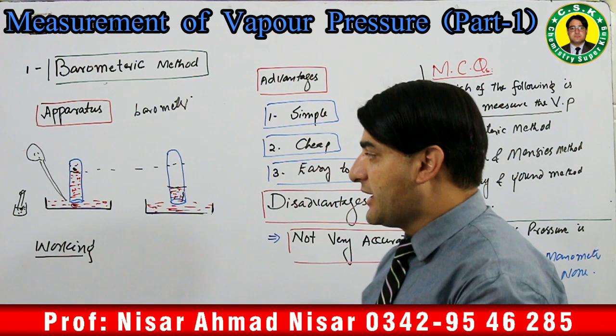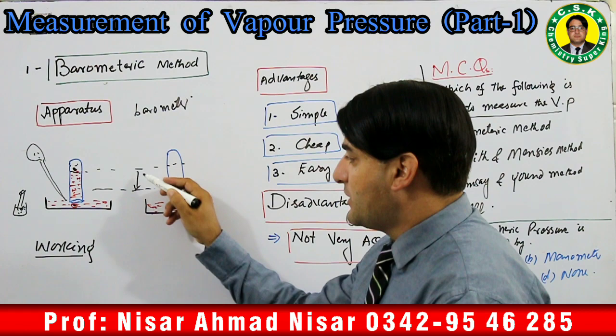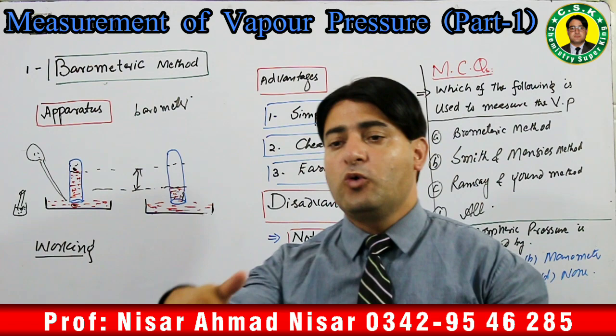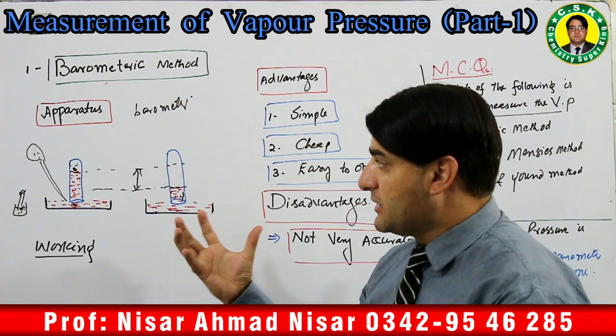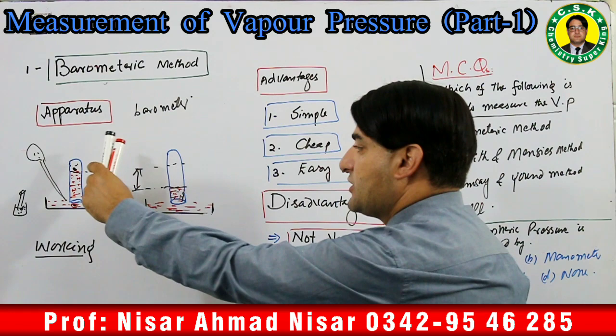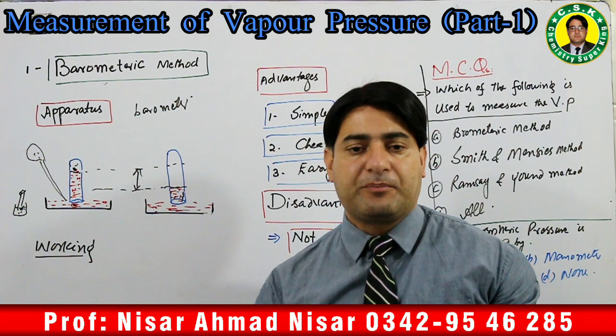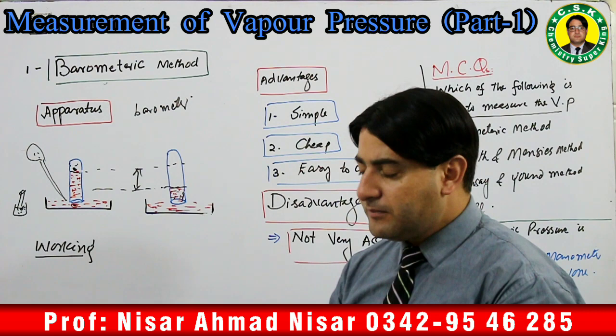Jab downward pressure lagaayenge to mercury ka level tube mein neeche aa jaayega. Jitna shuru mein level tha aur jitna ab level hai, in dono ke darmiyan difference معلوم کریں گے — jitna mercury ke level mein kami aayi woh us liquid ka us particular temperature par vapor pressure hoga. Woh height difference, vapor pressure of that particular liquid at that particular temperature hoga.